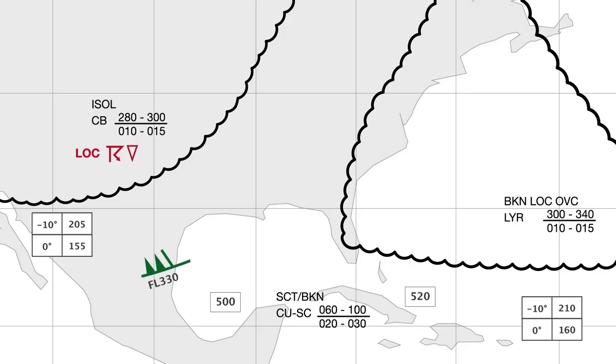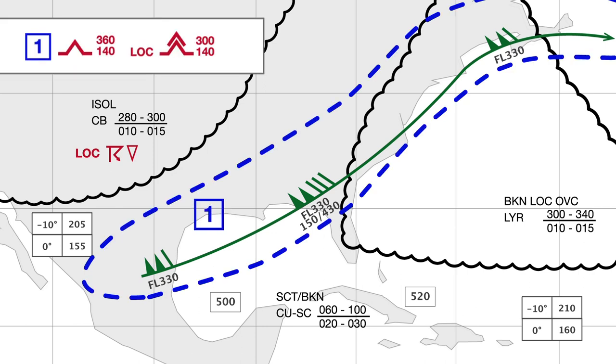Larger scale wind shear can be understood when comparing a significant weather chart with the synoptic chart. Associated to the jet stream, moderate to severe clear air turbulence can be encountered close to the tropopause.